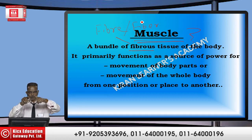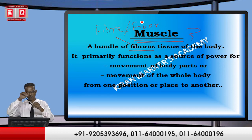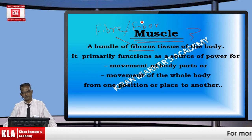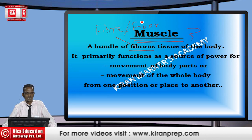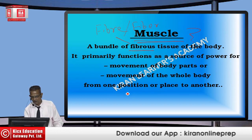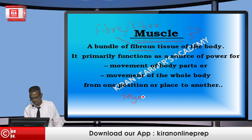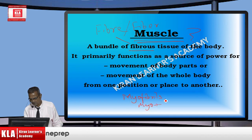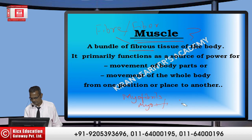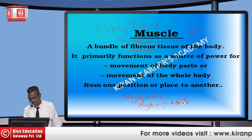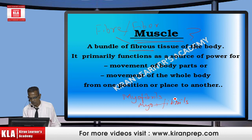If you just unroll a rope, you can separate the fibers. In the same fashion, like that bundle we see in the rope, we see the muscles. And what are these fibers that muscles are made up of? These are called myofibrils — myo plus fibrils — myofibrils. The fibers making the muscles are called myofibrils.